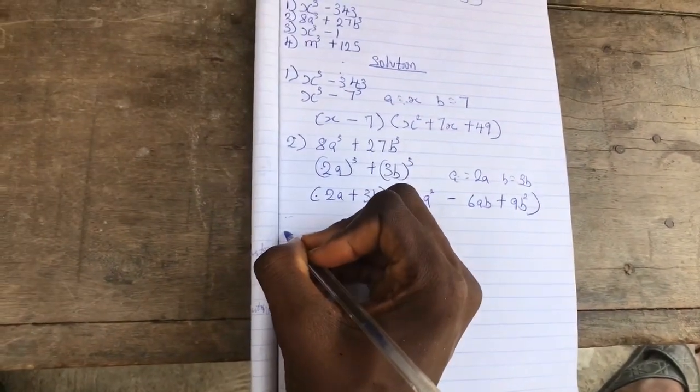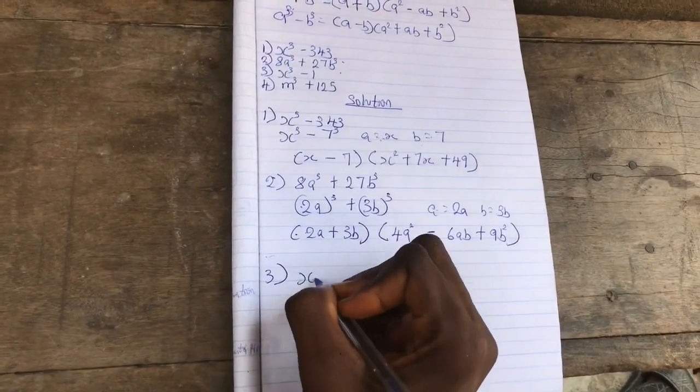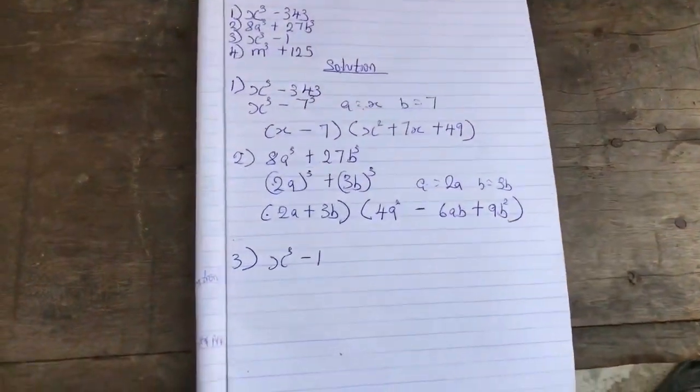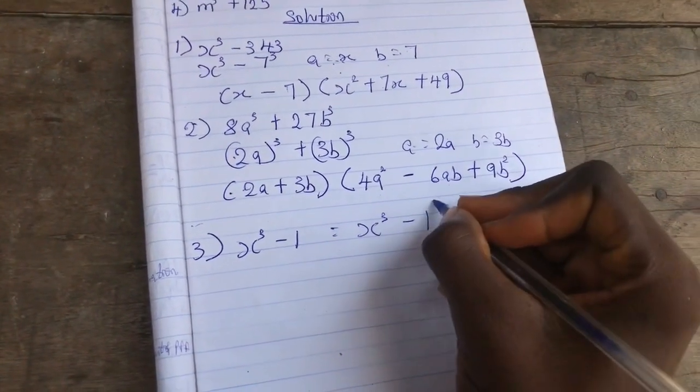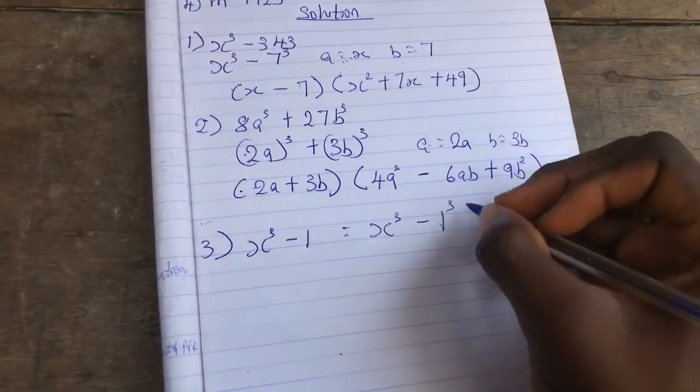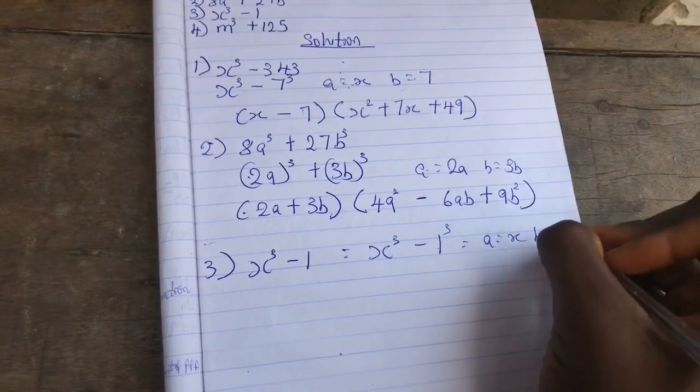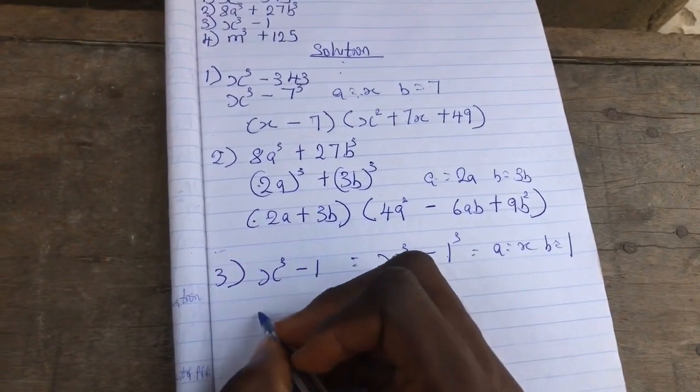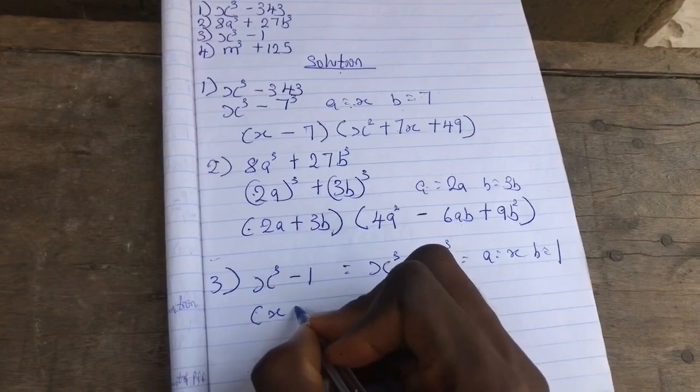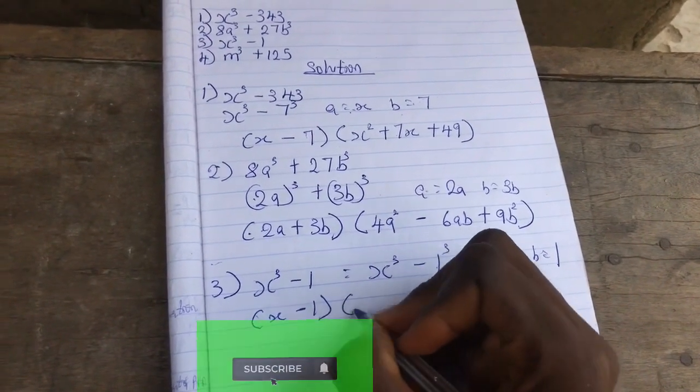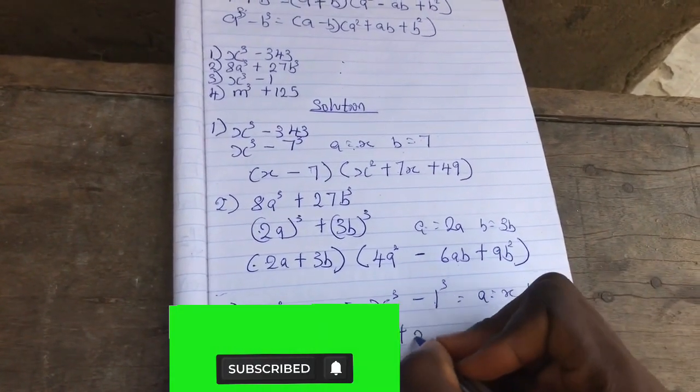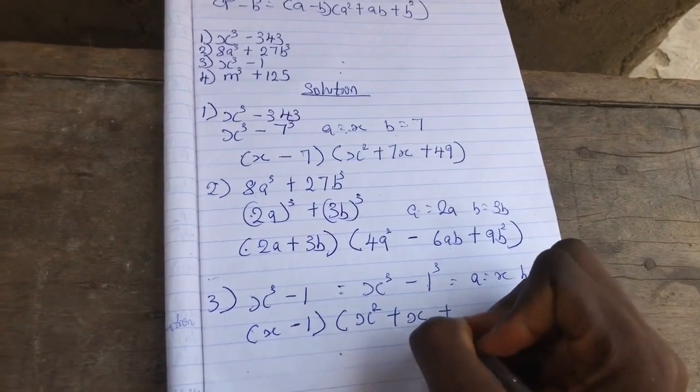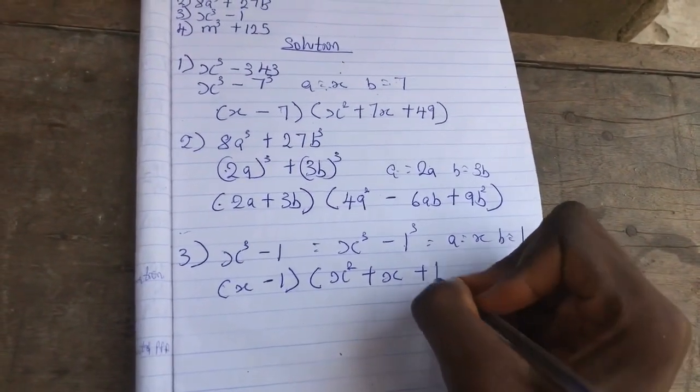Then we move to the third one, which is number three: x³ - 1. I want you guys to give this a try. It's the same as x³ - 1³. Our a is x and our b equals 1. Remember it's the difference, so this would be (x - 1)(x² + x + 1). This is our answer.